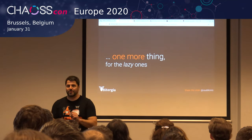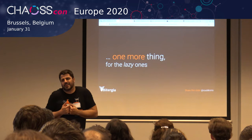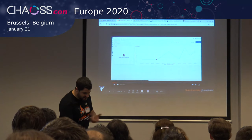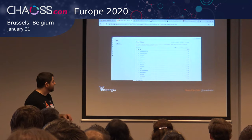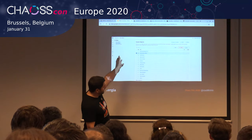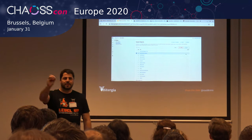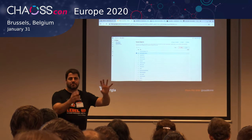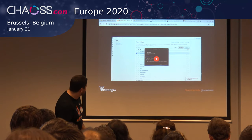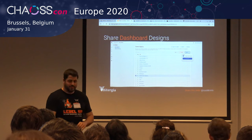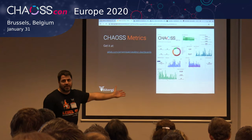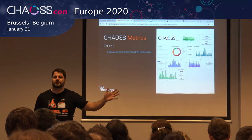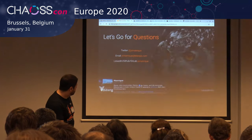One more thing — for the lazy ones. Imagine you design a dashboard, and you want to share the design with someone. You can go there, click export, and the JSON file that defines the dashboard is automatically downloaded to your laptop. You can put that in a repository that people can clone and use in their own account. What I created this morning before breakfast was a CHAOSS metrics dashboard for Cauldron. Basically, about half of the metrics defined in the current release of CHAOSS are supported by Cauldron.